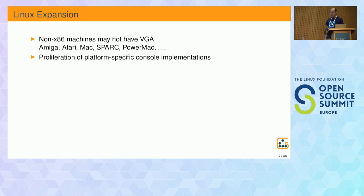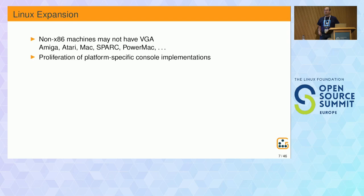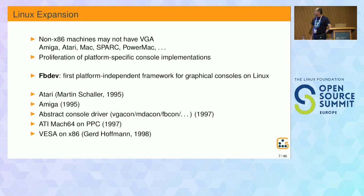When Linux grew beyond x86 it gained support for many other machines, several of which did not have VGA text mode or VGA graphics cards. What happened was a proliferation of platform-specific console implementations — basically every port of Linux to a different platform with a graphical console implemented its own console, which was of course not a good thing. Finally in 1995 we got a framebuffer device subsystem, which was the first platform-independent framework to have graphical consoles on Linux.